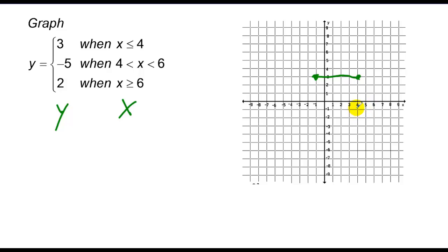At x equals 4, I go down to negative 5, but I can't include it because it says x is strictly greater than 4, so I use an open circle. I graph y equals negative 5 between x equals 4 and x equals 6, where 6 is also not included, so open circle there too. Finally, at x equals 6 I go up to 2 with a closed circle and graph y equals 2 to the right. So I have three partial graphs based on these x values.